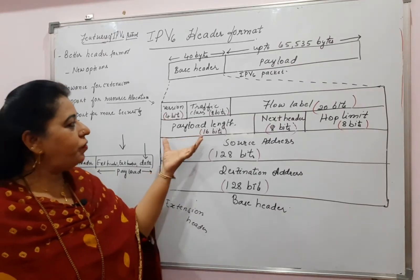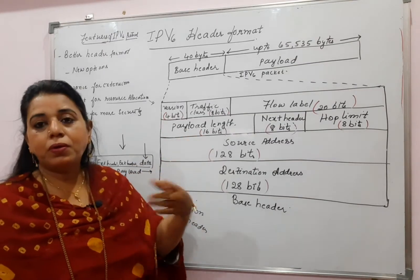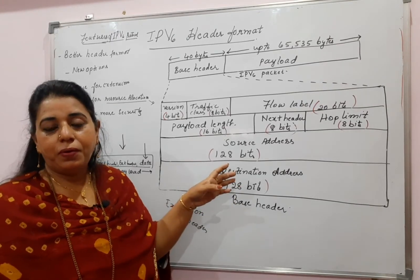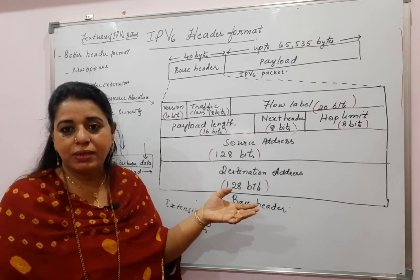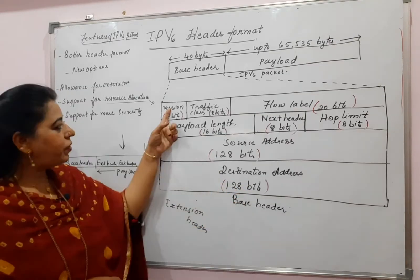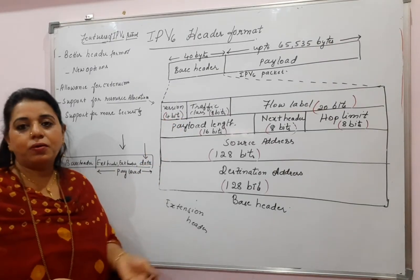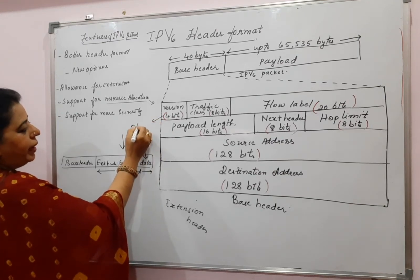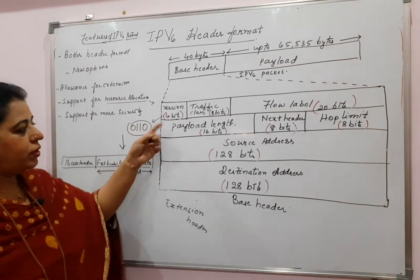The other fields are simple because you already know the functionality of different fields from IPv4. The first field is the version field, occupying 4 bits. The version is 6, so the binary value for the version will be 0110 — that will be the value for the version.